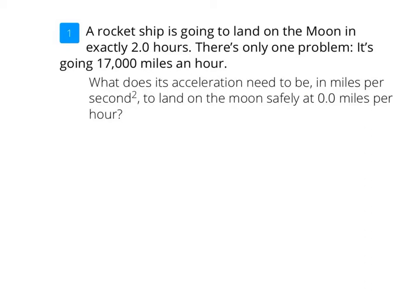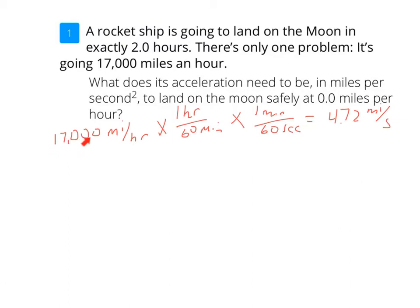Here we have a problem where a rocket ship is going to land on the moon in exactly two hours, but it's going 17,000 miles per hour. What does its acceleration need to be in miles per second squared to land safely at 0.0 miles per hour? First, we convert 17,000 miles per hour to miles per second using unit conversions: 1 hour equals 60 minutes, and 1 minute equals 60 seconds. Doing the math, we get 4.72 miles per second.